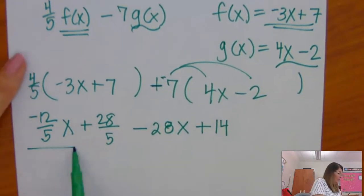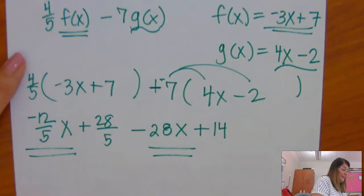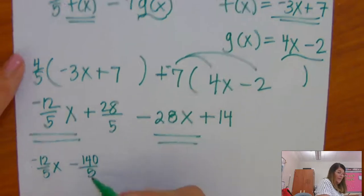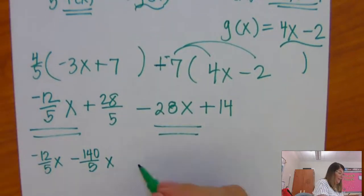So, be careful with that. Now I have to combine my like terms. So, I'm going to use my calculator for 28 times 5. So, I've got -12/5 x minus 140/5 x. I just wrote those with a common denominator.